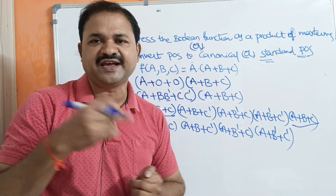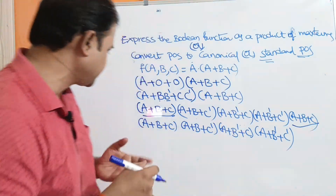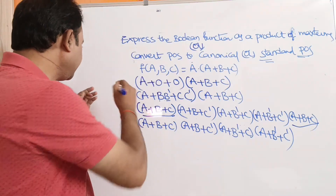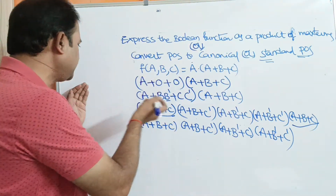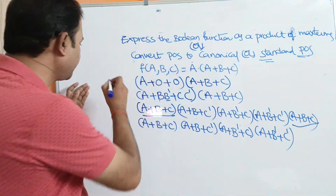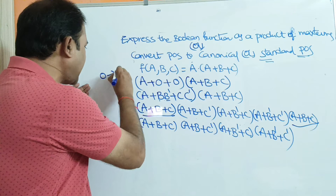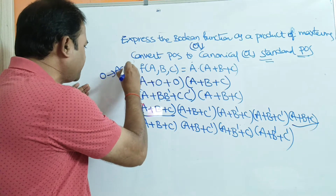If we want, we can write the canonical POS in terms of decimal numbers. For that purpose, in a product of sum expression, zero represents the actual variable and one represents the complement of the variable.